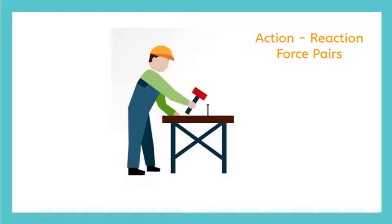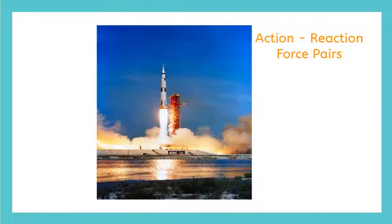Action-reaction force pairs act on two different objects like the hammer and the nail. Each is exerting an equal and opposite force on each other. Or the space shuttle and the ground. They're also exerting a force on each other. Two different things.